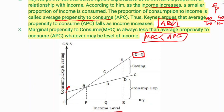The slope of our consumption line is the marginal propensity to consume. At all points — A point, B point, D point — the marginal propensity to consume is not the same; it varies along the consumption line.